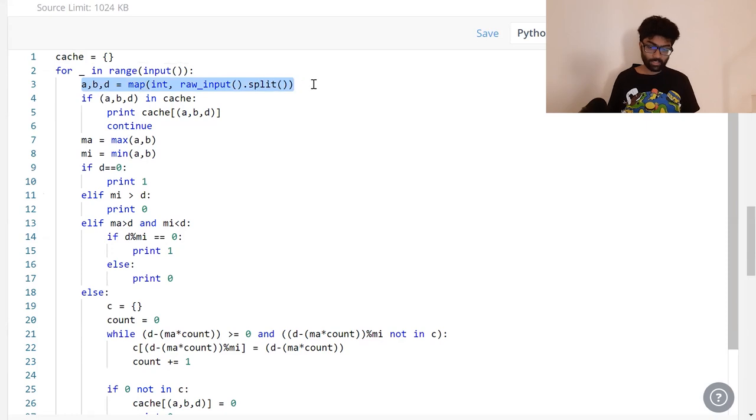First, we take a, b, and d. That's our input. We find which of the two weights is the maximum and the minimum. Now, if d is equal to zero, the output is naturally one. That means we take zero a's and zero b's. We combine them to get zero. If the smallest weight is greater than d, so let's say we've got to combine ten and eleven to get four, it's not possible. Even the smallest weight is greater than d. That's why we just return zero straight away.